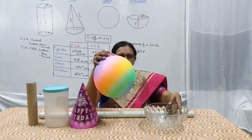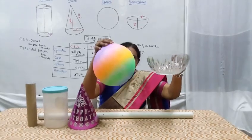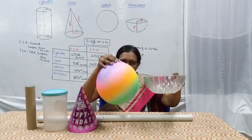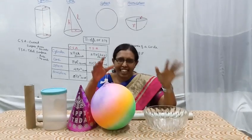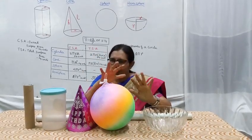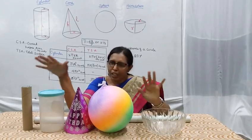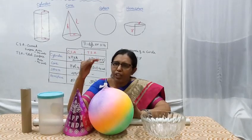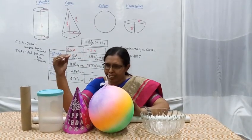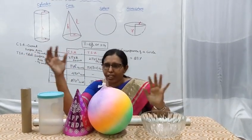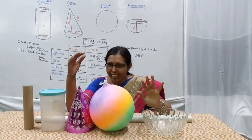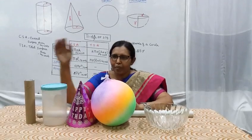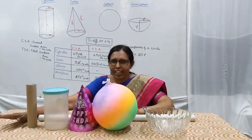For a sphere and hemisphere, the key dimension is the radius. I will give you the standard formulas. Learn them, practice the exercises, and you will be able to solve any problem using the formula.